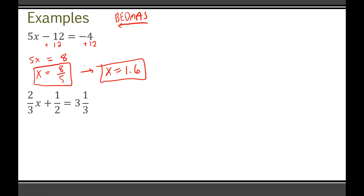The next one is 2/3 x + 1/2 = 3 and 1/3. We don't like mixed numbers in math, so we convert that first. 3 and 1/3 becomes 10/3, since 3 times 3 is 9, plus 1 is 10. So we have 2/3 x + 1/2 = 10/3.